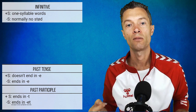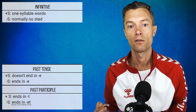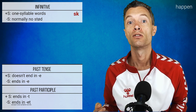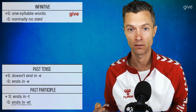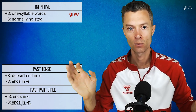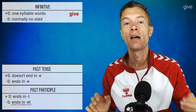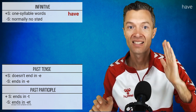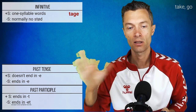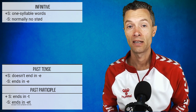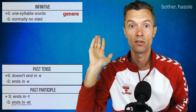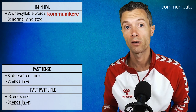Stød in the infinitive often occurs with one-syllable words ending in a vowel sound: 'få' — stød; 'gå'; 'ske'; 'gi' — in modern Danish pronounced as one syllable with stød. Also 'se' and 'te' can have stød, though we could also say them without stød. And of course the -ere words — regere, genere, kommunikere — have stød in all their forms.